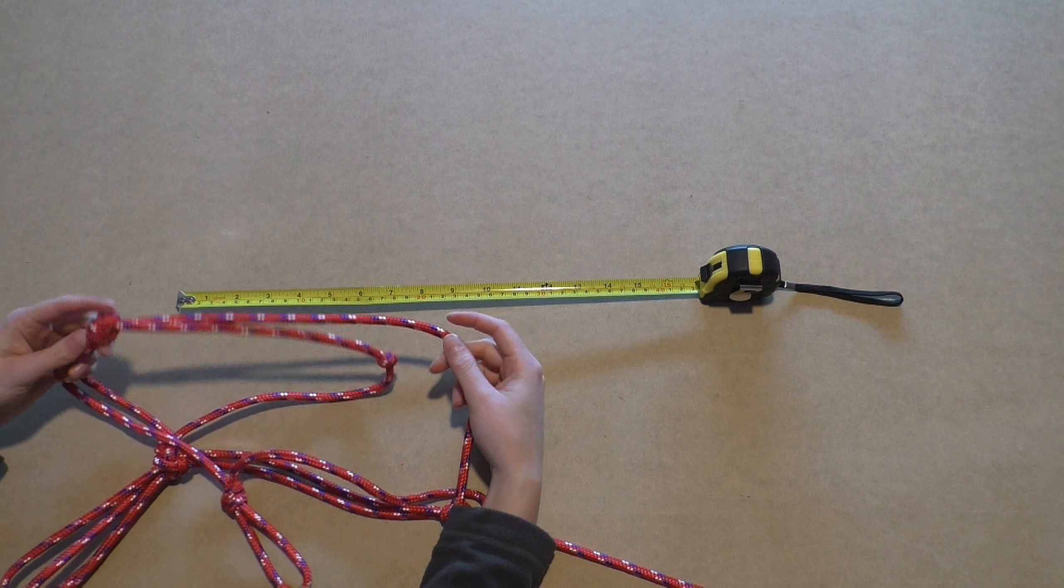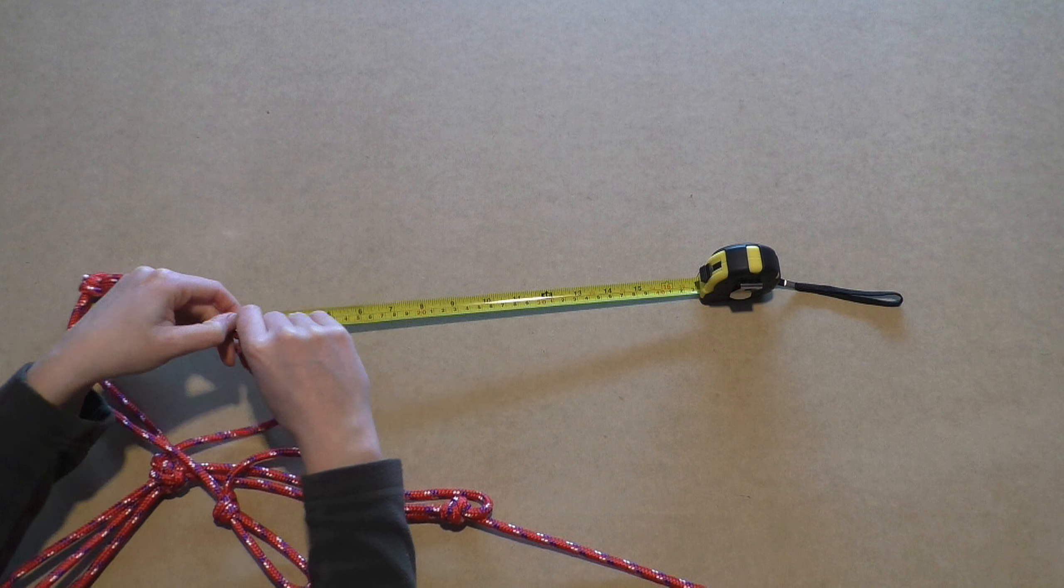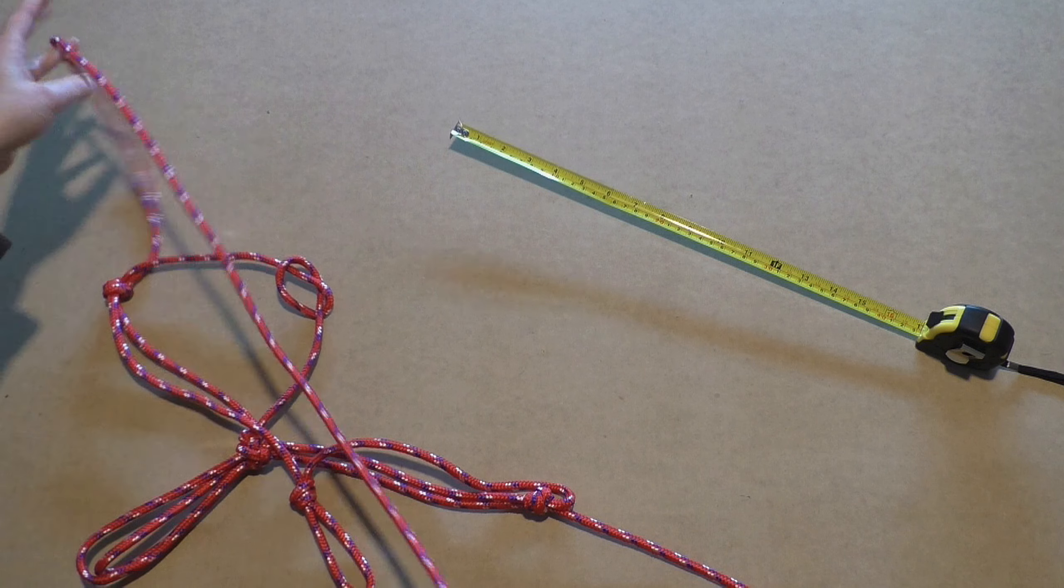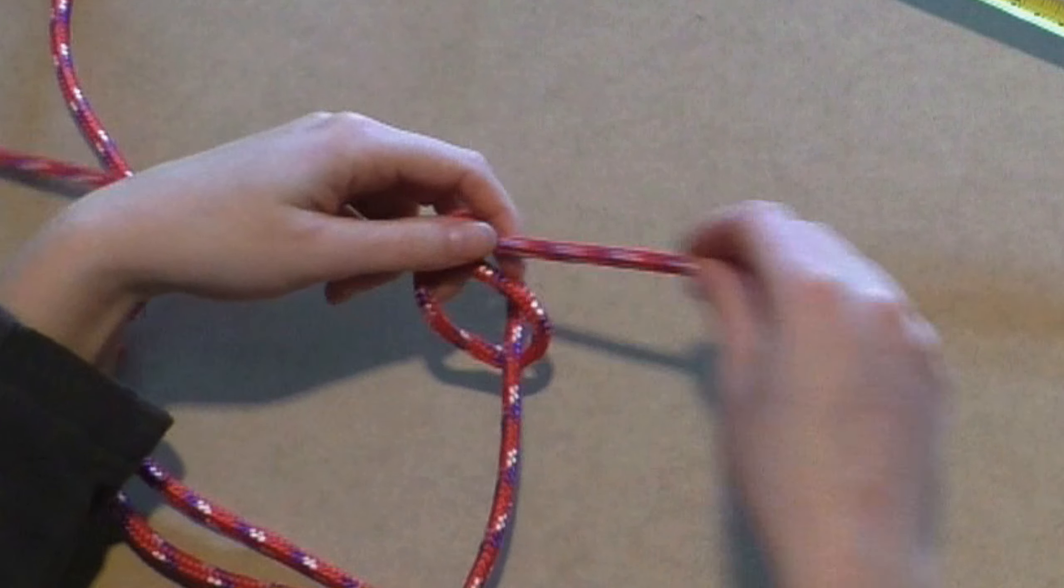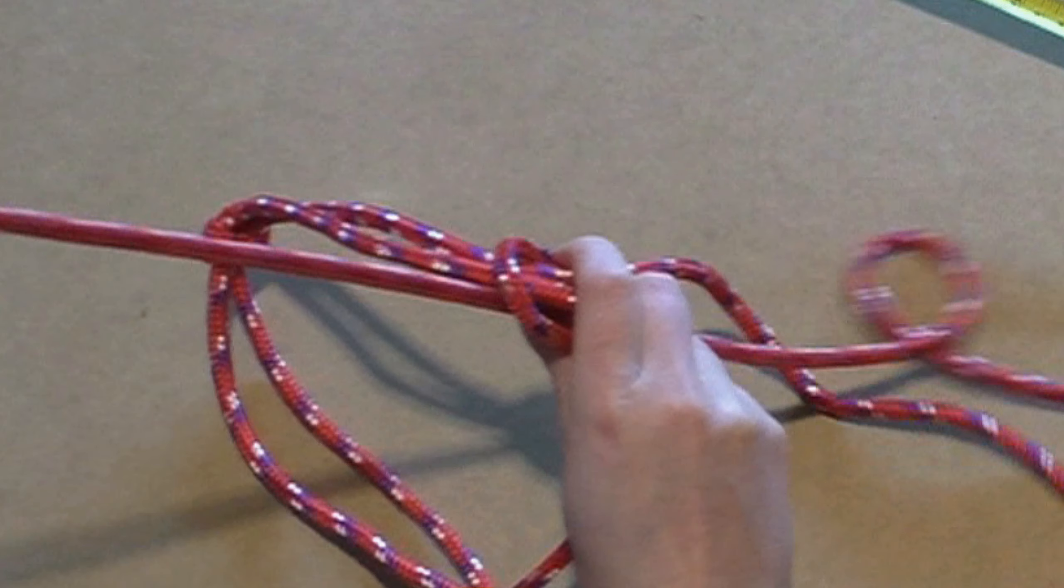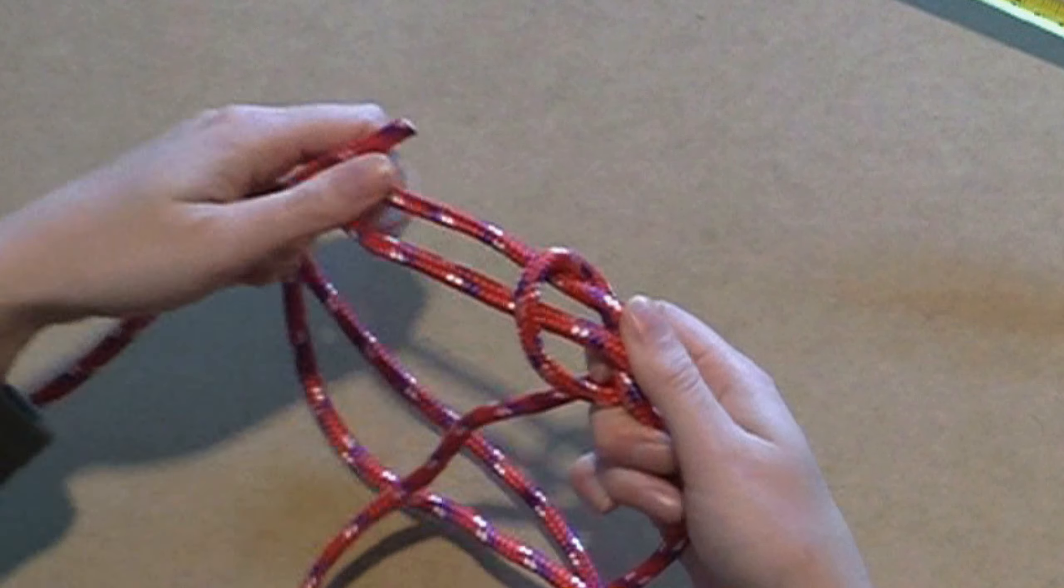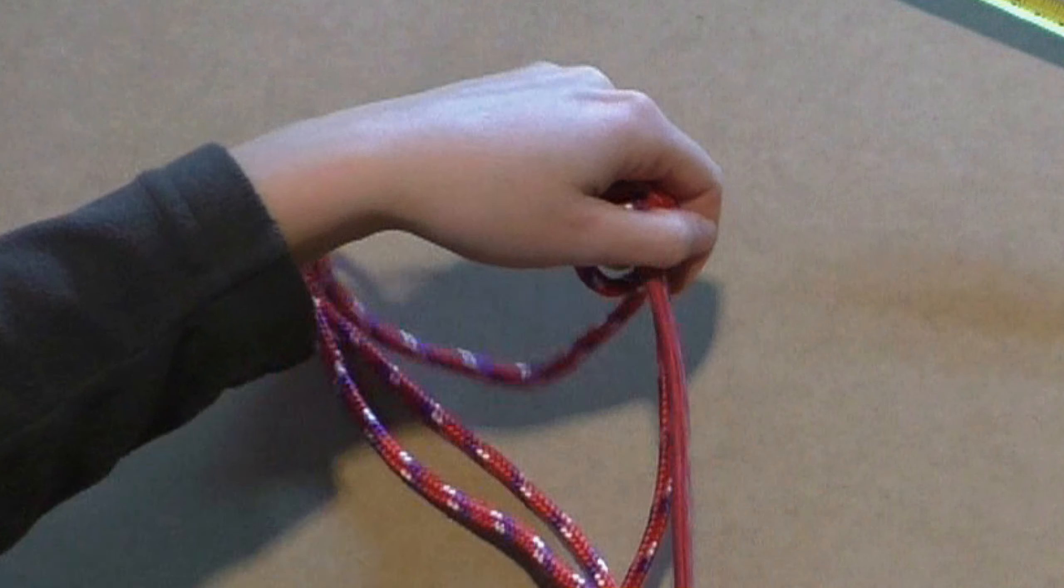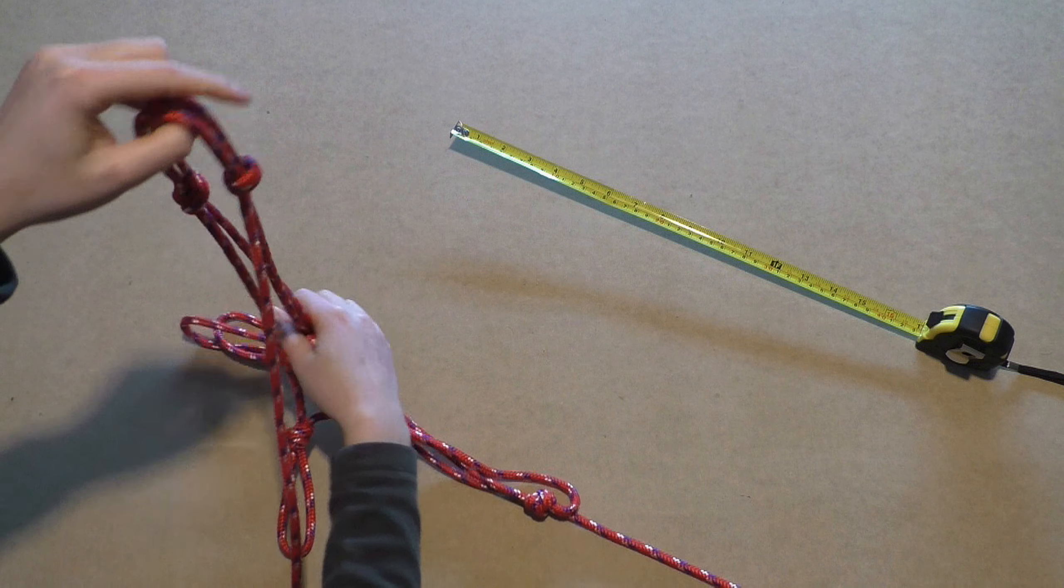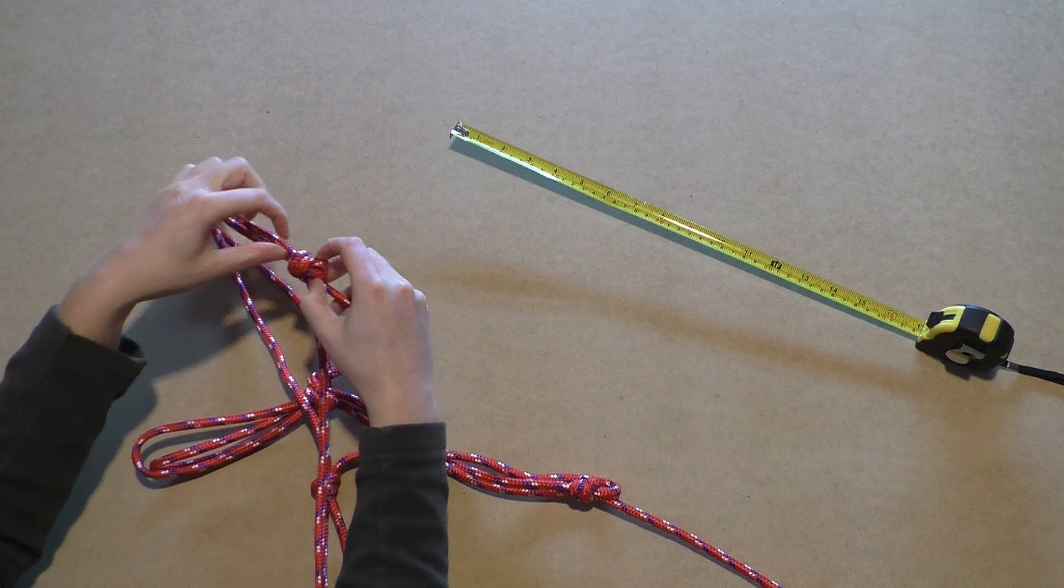Follow the noseband to the next overhand knot and feed the rope through that one as well. These overhand knots on the noseband are still at a similar distance from the Fyodor knot.